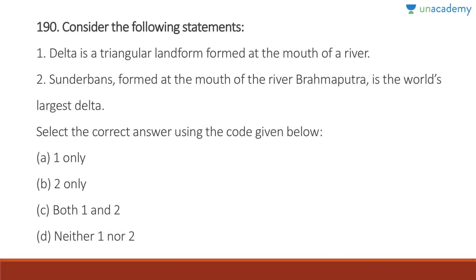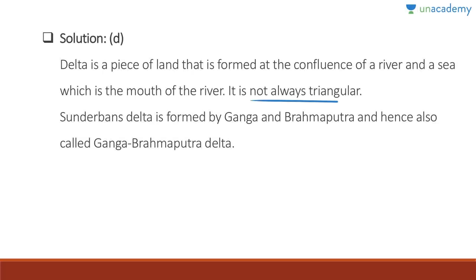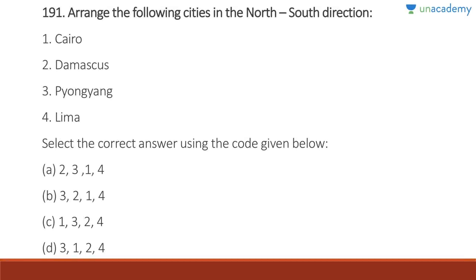Question 190: Delta is a triangular land formed at the mouth of a river — wrong; it is a piece of land formed at the confluence of a river and a sea, but it is not necessarily triangular. The Brahmaputra is the world's largest delta — also wrong; the Ganges-Brahmaputra delta is the world's largest, formed jointly by the Ganga and Brahmaputra rivers. Answer is D, neither one nor two.